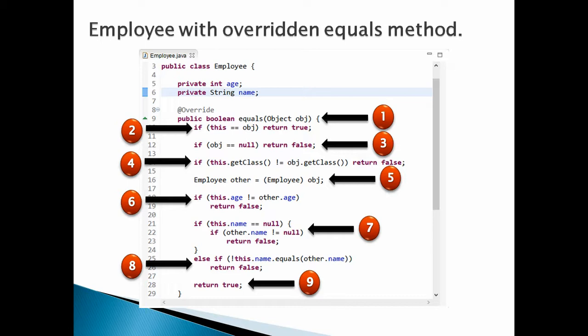Number eight, going into the else condition: as the String class has already overridden the equals method, we can use the equals method of String class to check if the string values stored for this employee and the incoming employee are the same. Number nine, if all the checks are bypassed by the two employee objects, then return true, because all previous checks were done for negative scenarios. If it reaches the end, it means it's a positive case where 'this' object is equal to the object coming to the equals method.